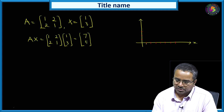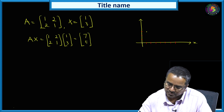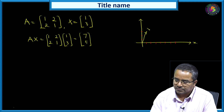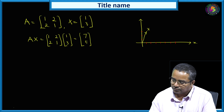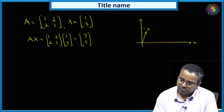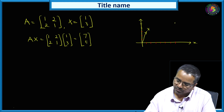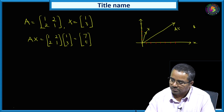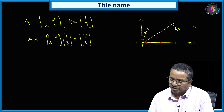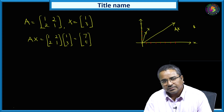So x is at coordinates (1, 3) on the graph. After multiplying, Ax gives us [7, 5], so we plot point (7, 5). So whenever we operate this matrix on the vector, we can observe two things: one is it changes the direction and changes its magnitude — that means it is scaled and rotated.